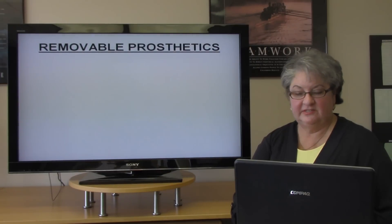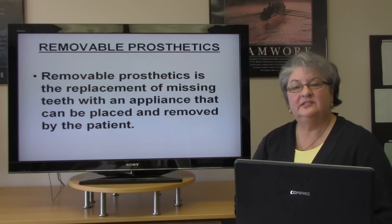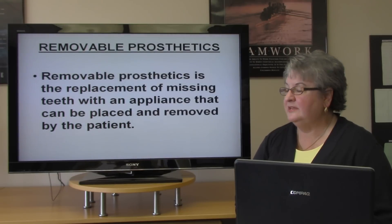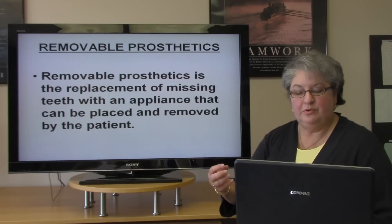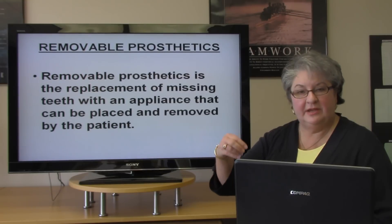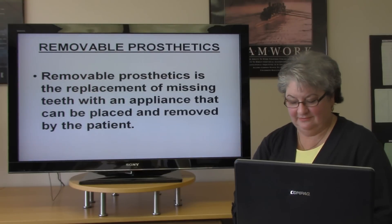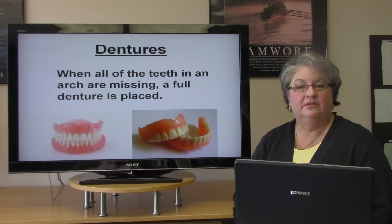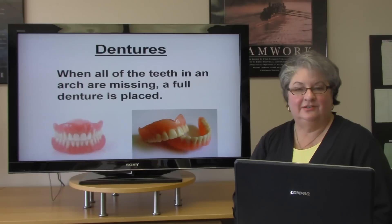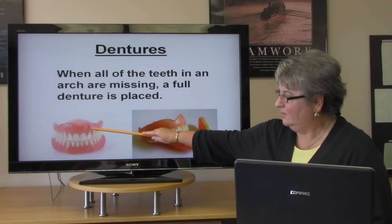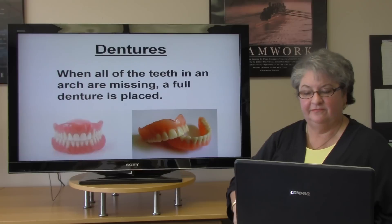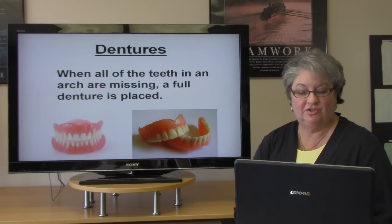Removable prosthetics are replacing missing teeth with an appliance that can be removed or placed by the patient. When all the teeth are missing in an arch, the doctor will place a denture — a full upper and lower set of dentures.